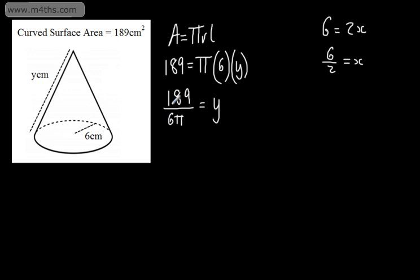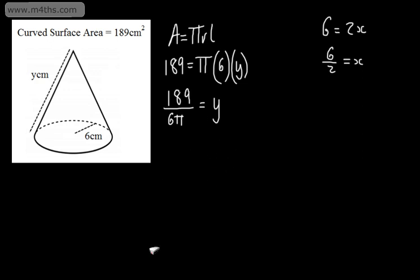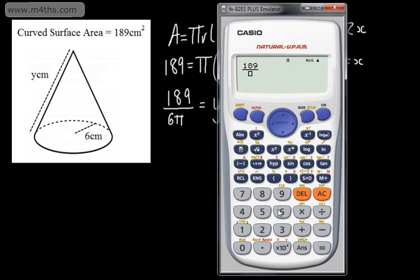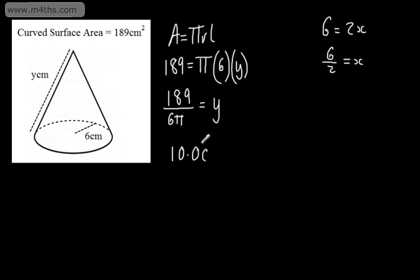Y is equal to 189 divided by 6 pi. Let's type this in to give a decimal answer — 189 divided by 6 pi — and that gives us 10.02. So we'll say that's going to be 10.0 centimeters, to one decimal place.